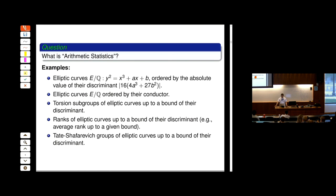Elliptic curves are smooth projective curves of genus 1. We can order elliptic curves by their discriminant or by their conductor, and sometimes you get different answers depending on how you count. This will come up even when talking about primes — sometimes you want to change a little bit how you count things, and then you see different statistics about how many of those objects are there up to your size.